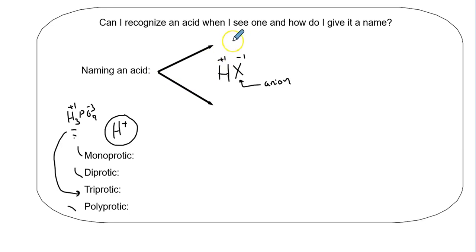So, naming acids, there's two different branches, and one of them would be called an oxyacid, and one's called a non-oxyacid. Now, when I first started teaching chemistry, I was like, they must have really screwed this up. Why make things more complicated? Why can't we just have one naming system for an acid, and just be done with it?